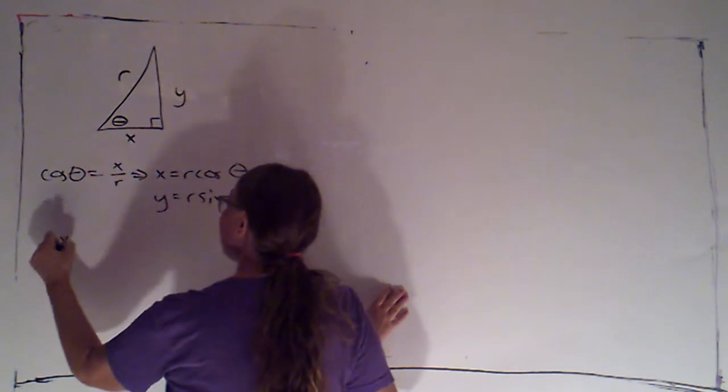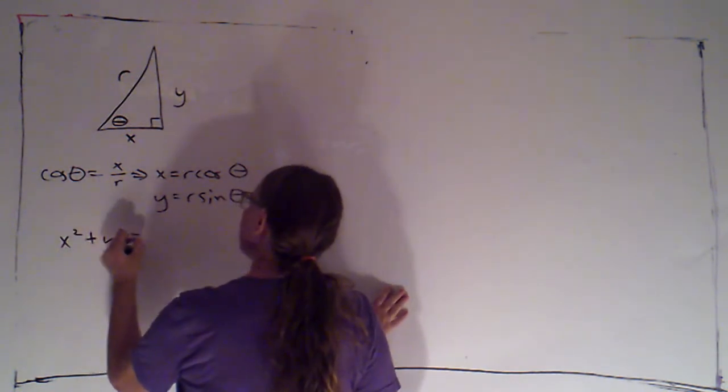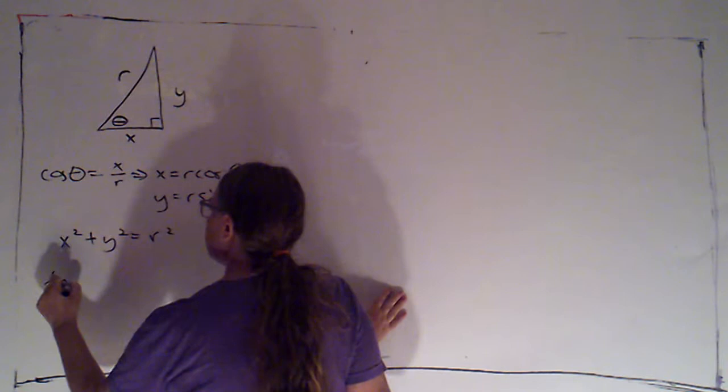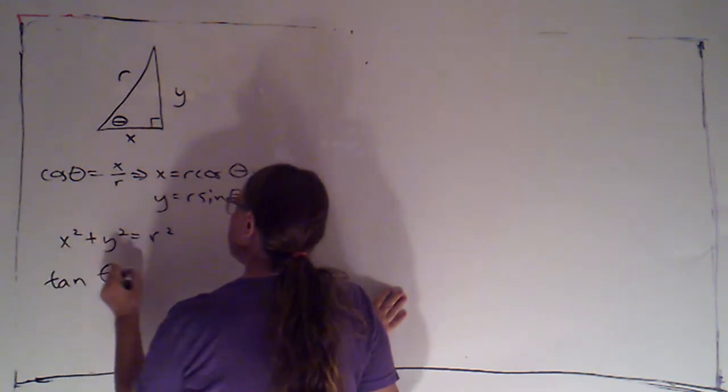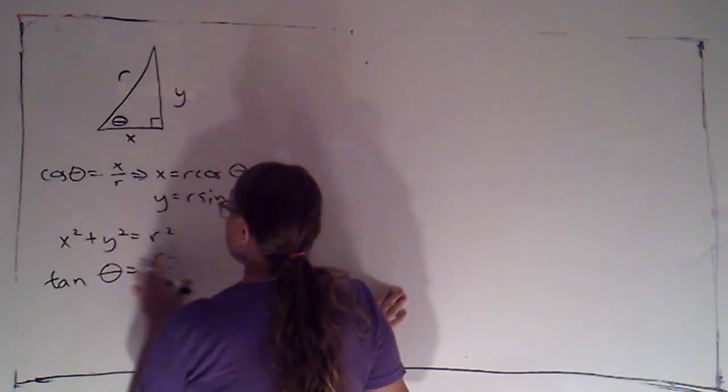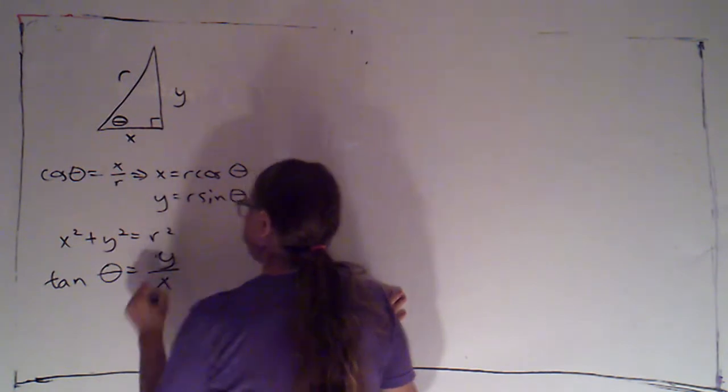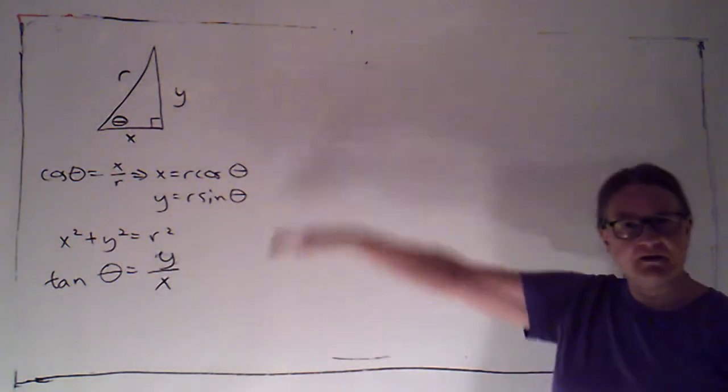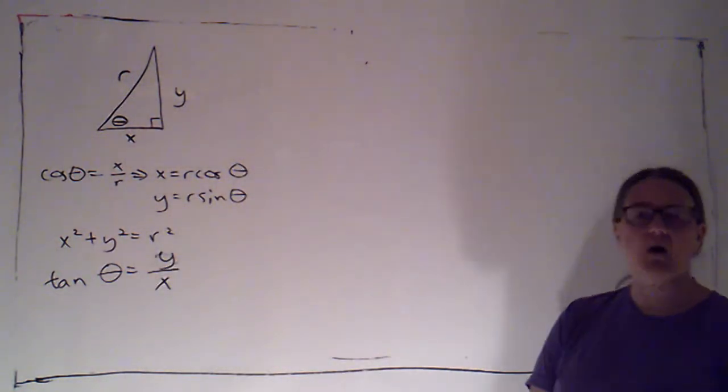Pythagoras tells me that x squared plus y squared is r squared. And I can see, just using right triangle trigonometry, tangent of theta is y over x. So these are the formulas I'm going to use as my tools to go back and forth.